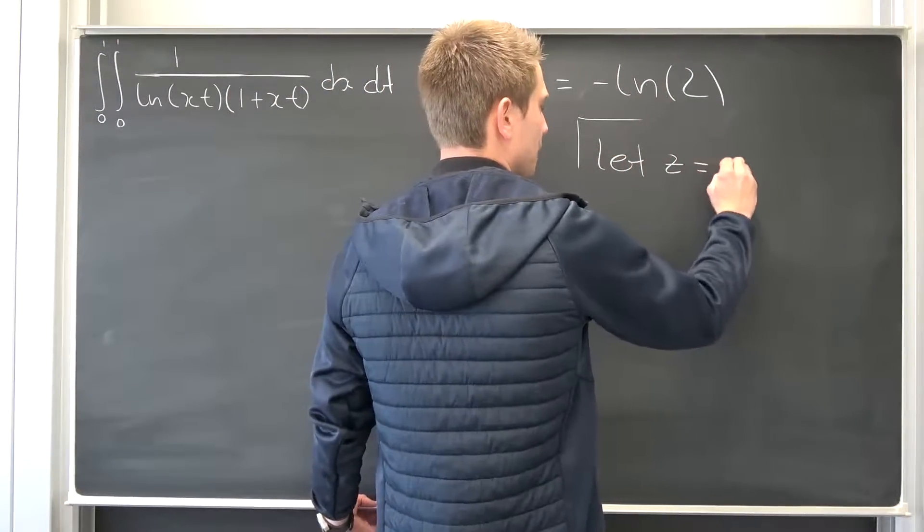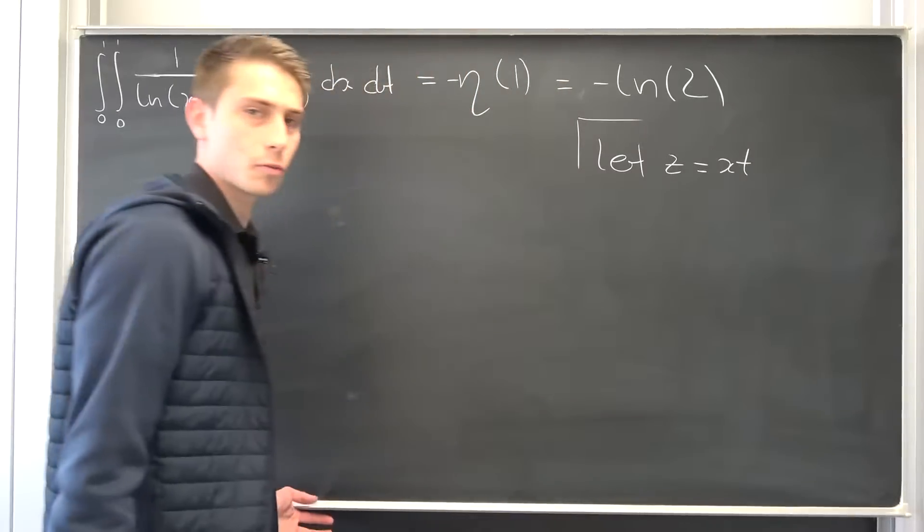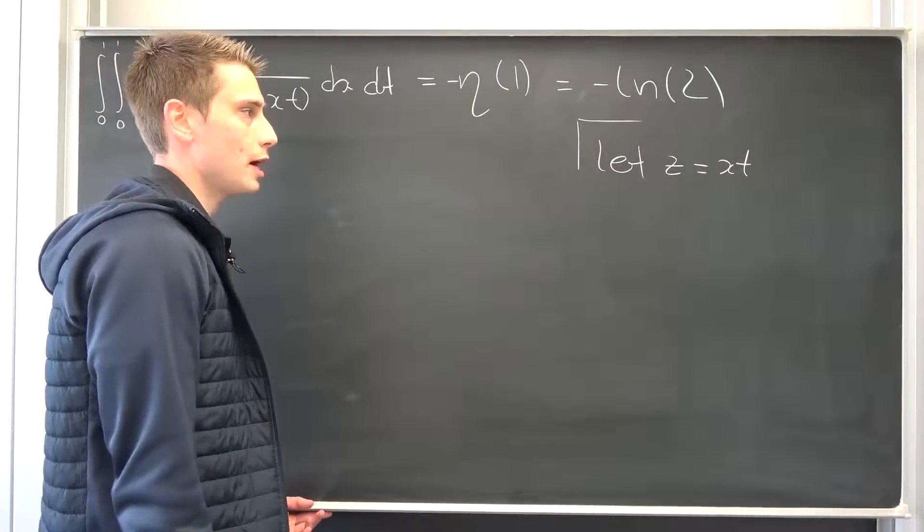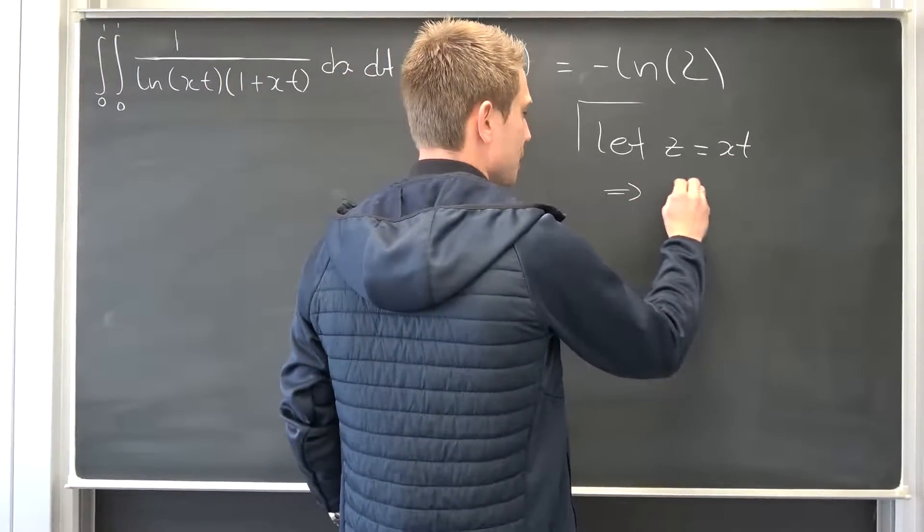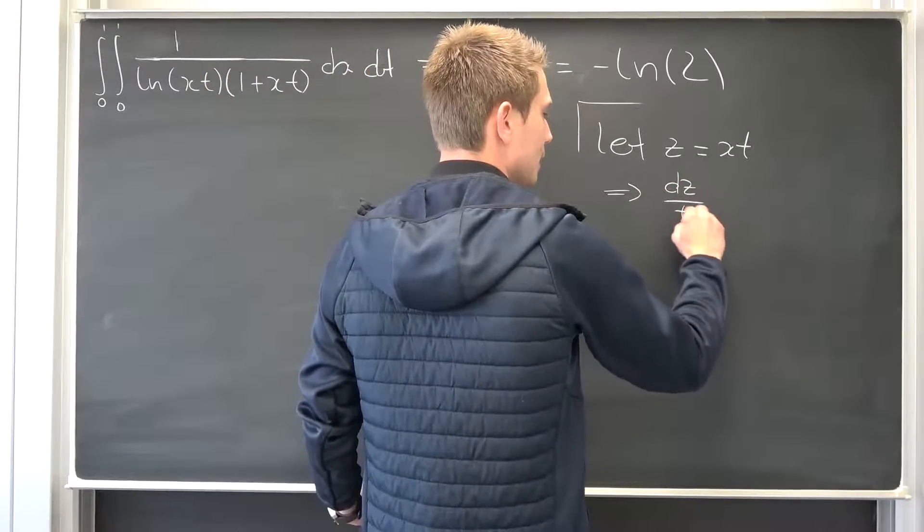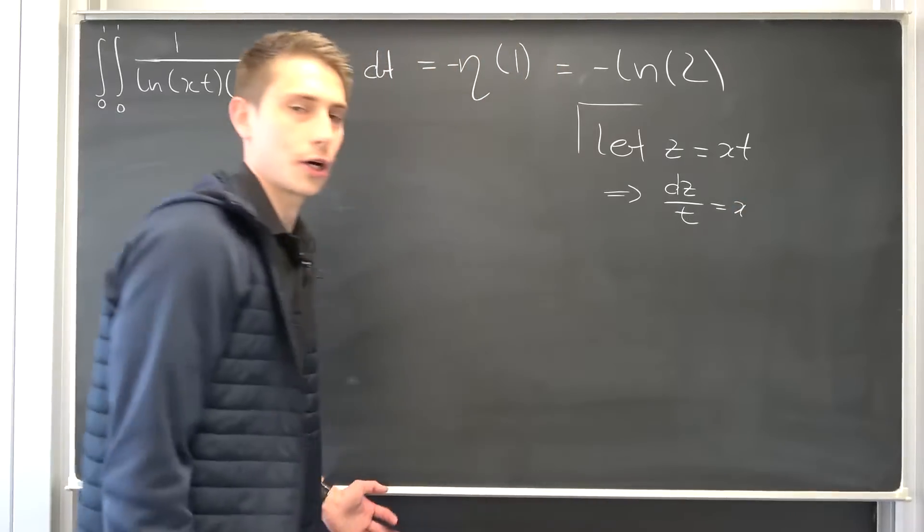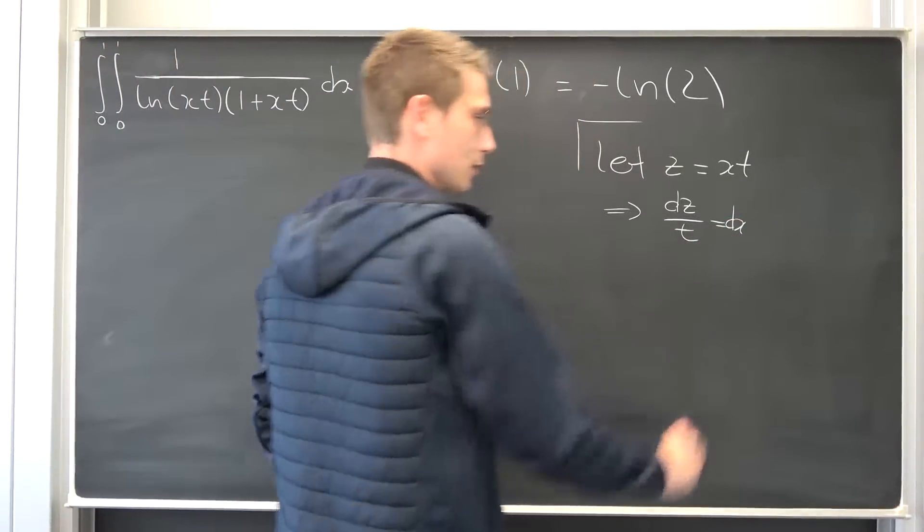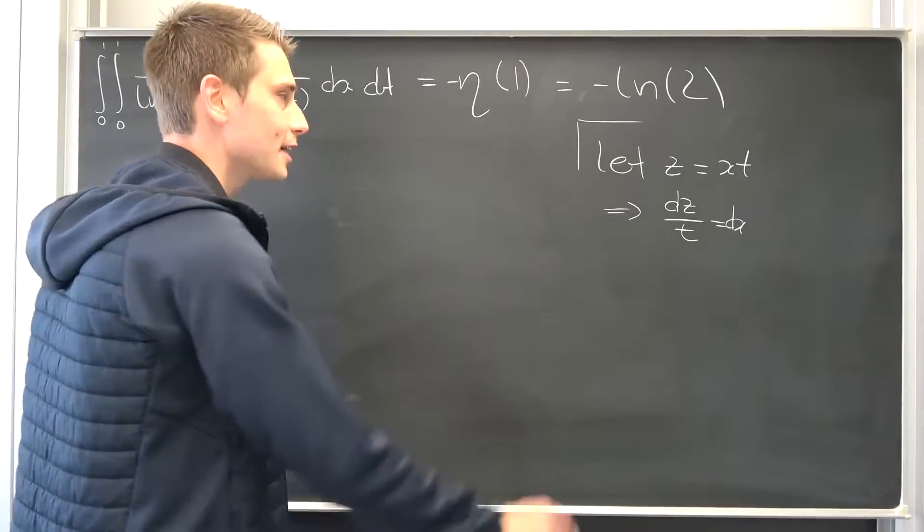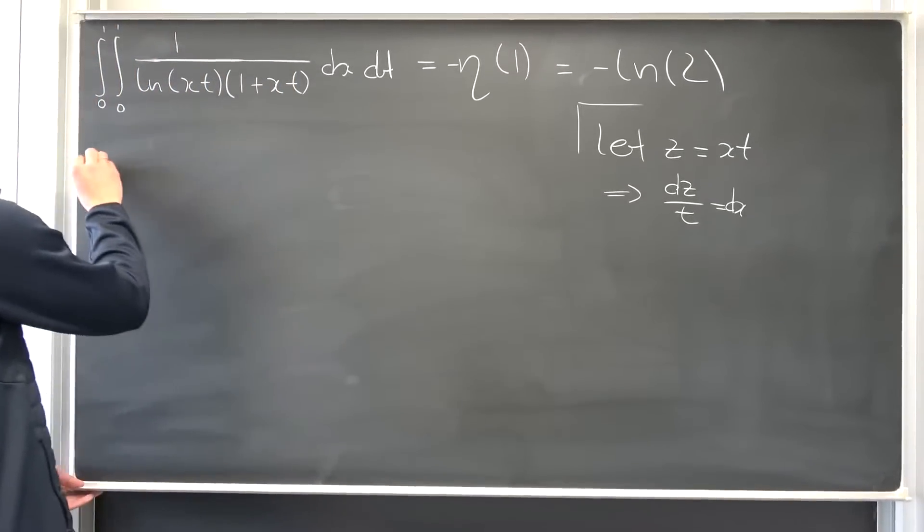Let z be equal to x times t, and we don't want t to be equal to 0 at the moment. So we can divide both sides by t to arrive at, when differentiating, that dz over t is nothing but dx. So this is dx, that's even more cool than just x, so we can plug this stuff into here.